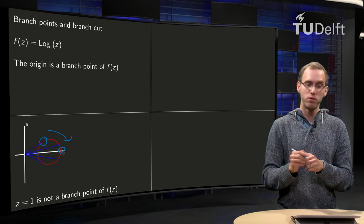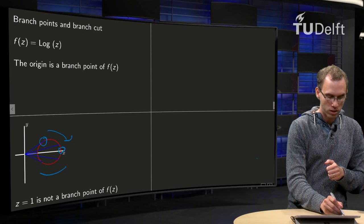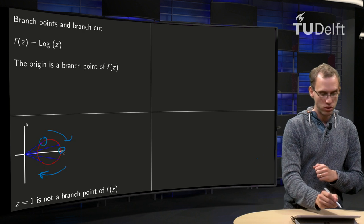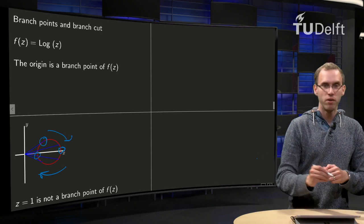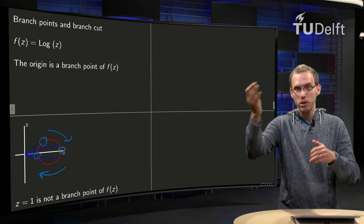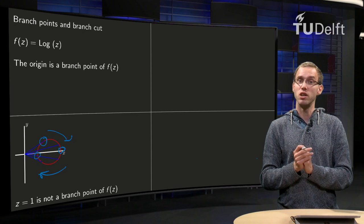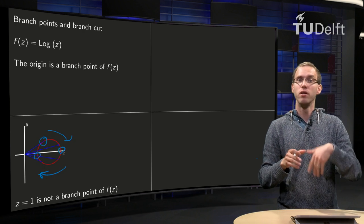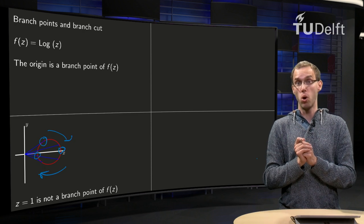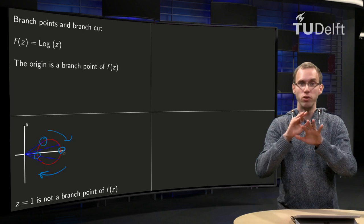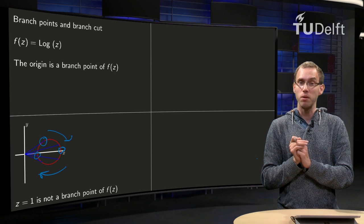And then if you continue, the norm decreases again gradually, until you are, say over here, the norm is approximately 1, and you increase again. So the norm varies continuously if you circle around 1, which means that the real part of the log of z, the ln of the modulus of z, also varies continuously. So we have no problems with the real part.